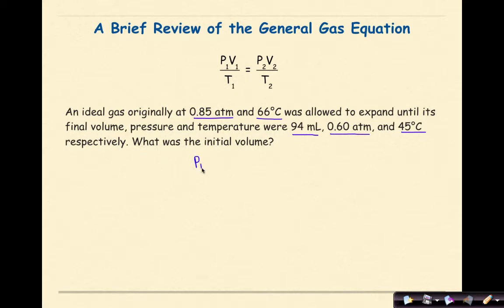We're going to write P1 V1 over T1 equals P2 V2 over T2. So my initial pressure is 0.85 atmospheres. My V1 is what I am solving for. My T1 is 66 degrees Celsius, so 66 degrees Celsius plus 273, that is going to give me 339 K. So I am going to put 339 K on the bottom.